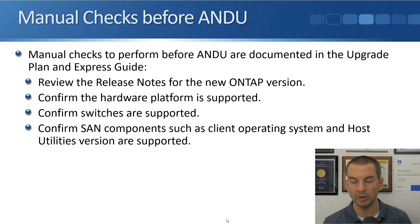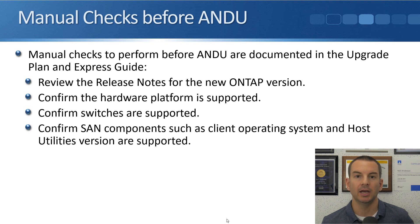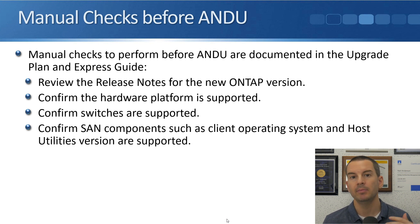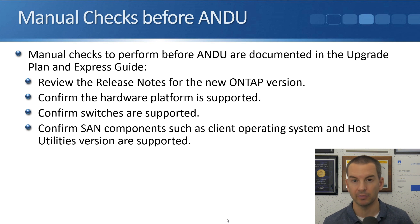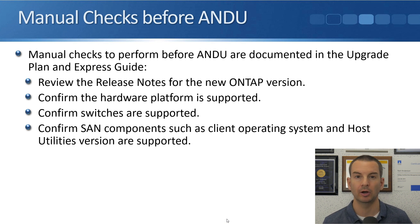Also check the switches you're using — the cluster switches and your network switches — to confirm they are supported and using the correct configuration. If you're using SAN protocols, make sure the clients are running a supported operating system compatible with the new version of ONTAP you're upgrading to, not just the old one. Also check that the host utilities version on the clients is compatible with the new ONTAP version — you may need to upgrade the host utilities as well.